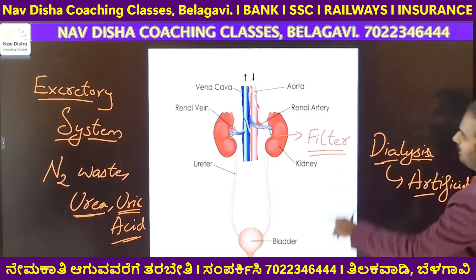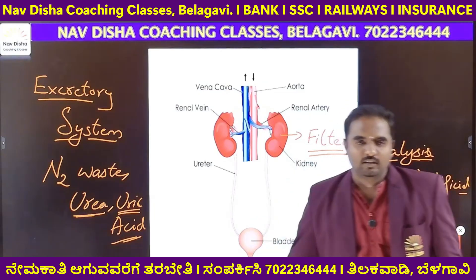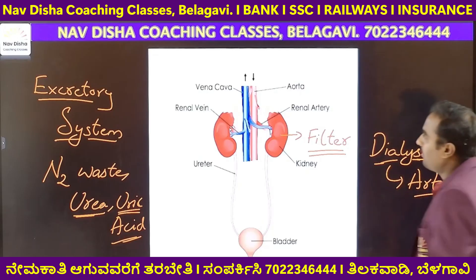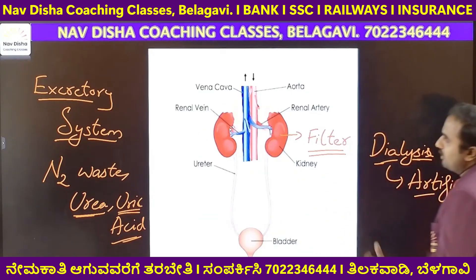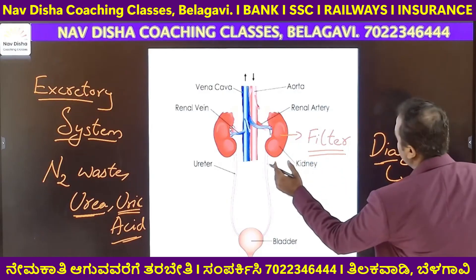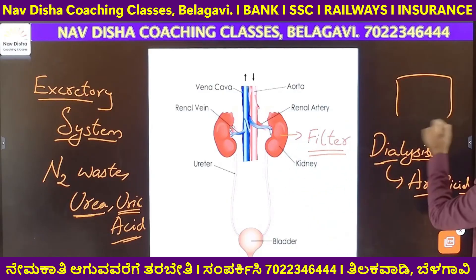If the kidney fails, the blood is not purified. If the blood is not getting pure, the heart will stop beating — it will get blocked due to the waste. At that time you can die immediately. That is why an artificial kidney — a machine — is used for filtration.